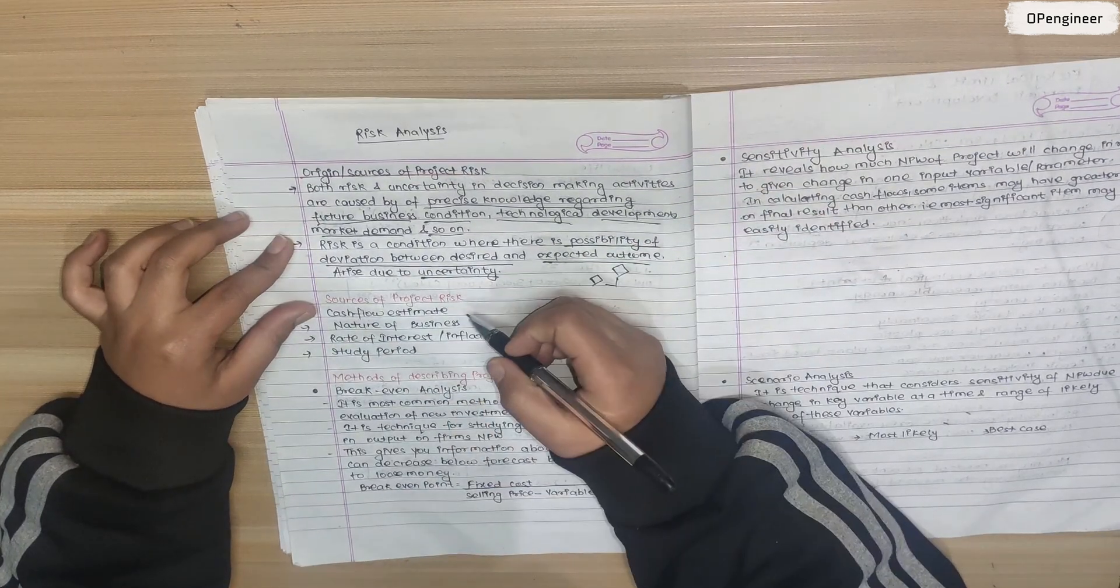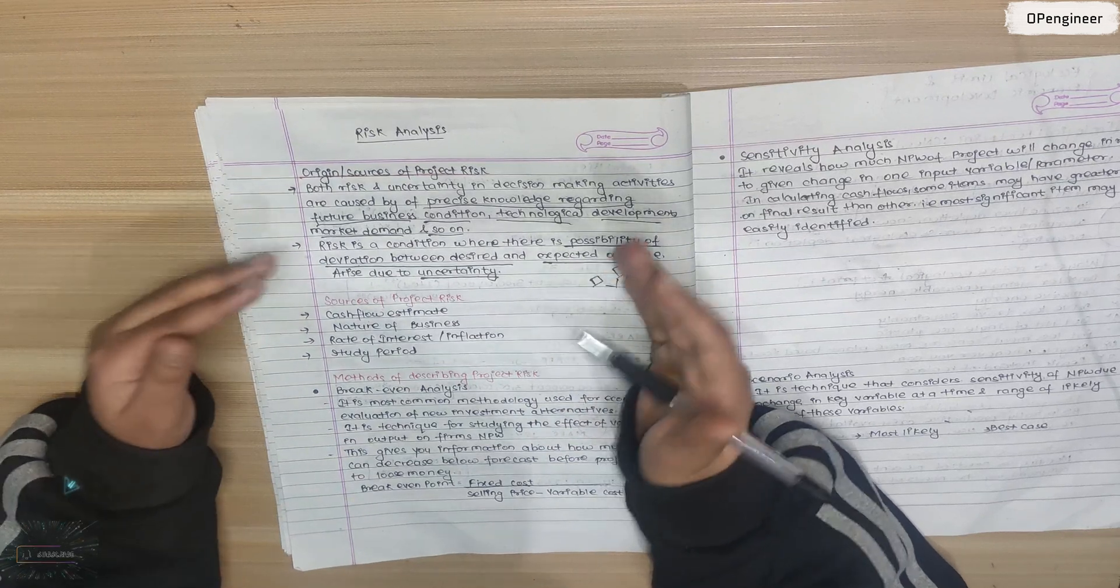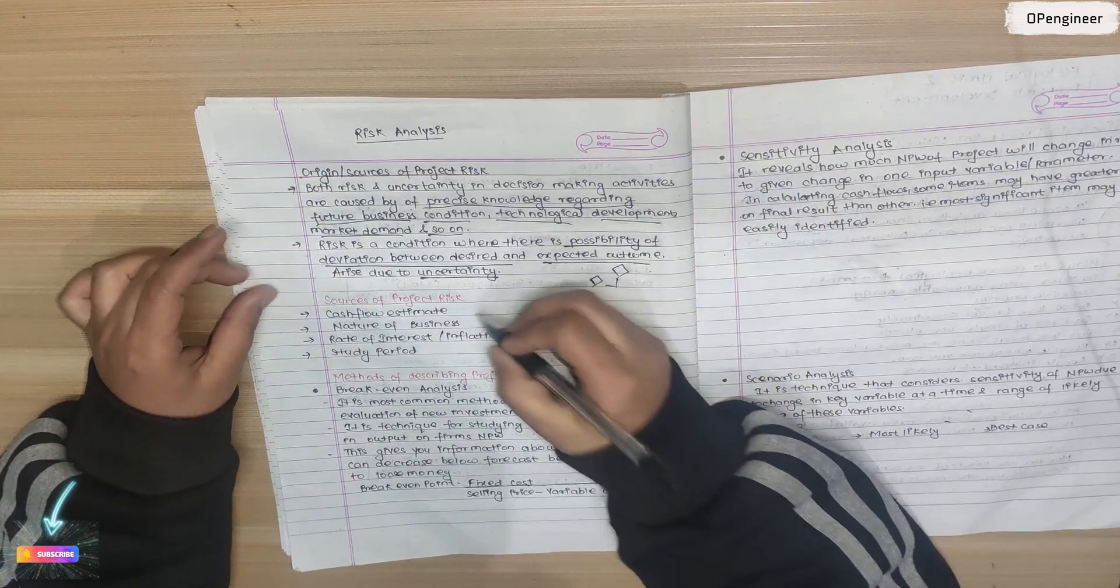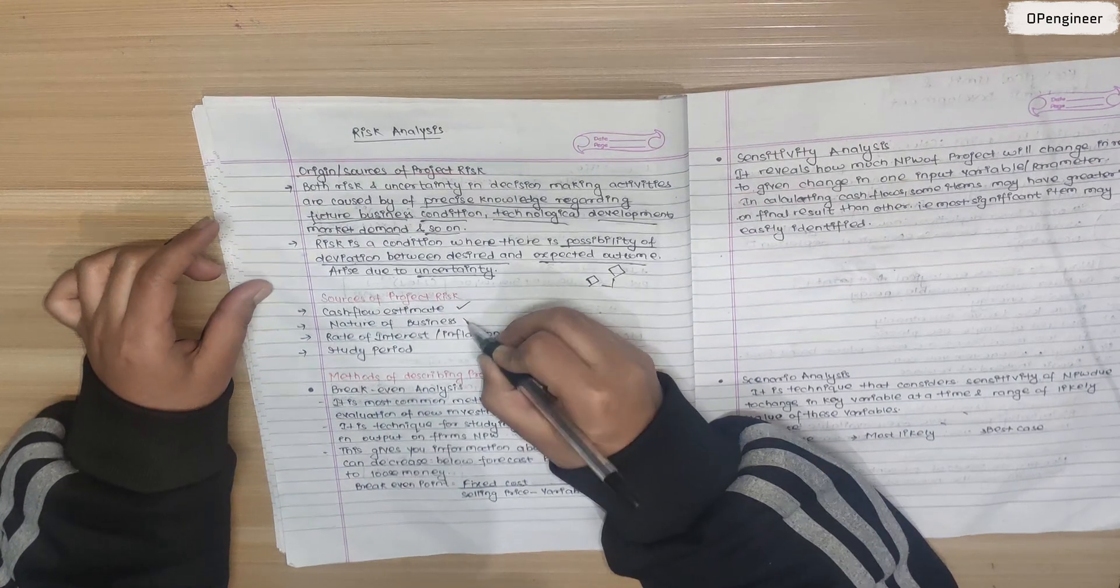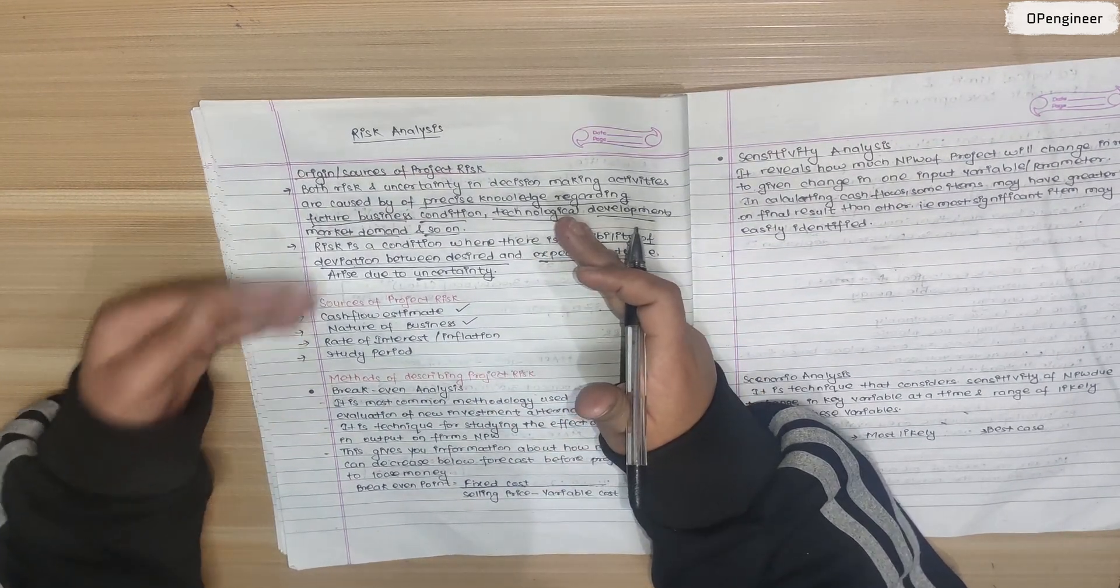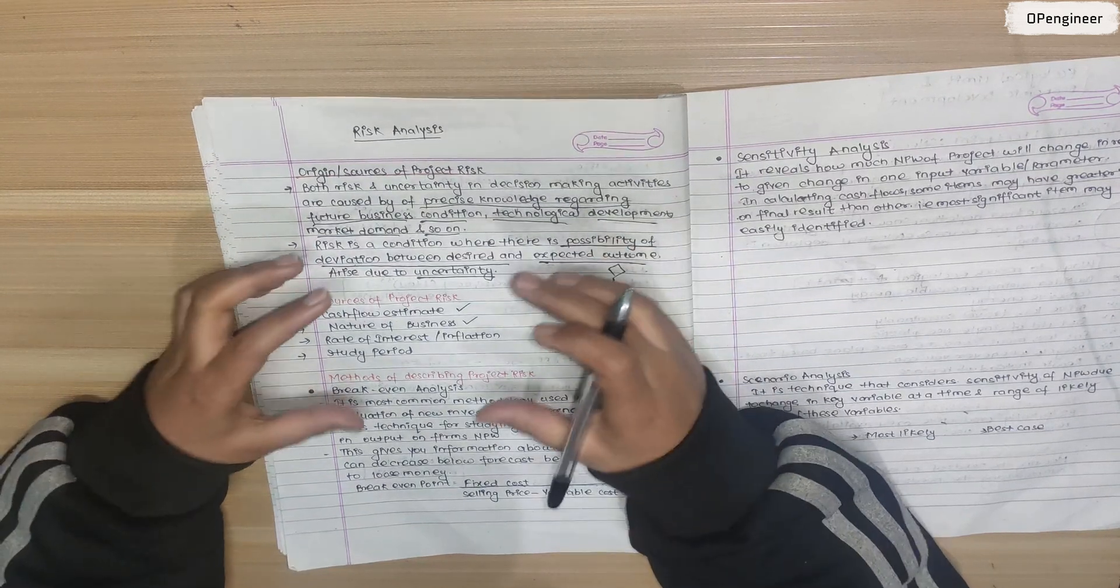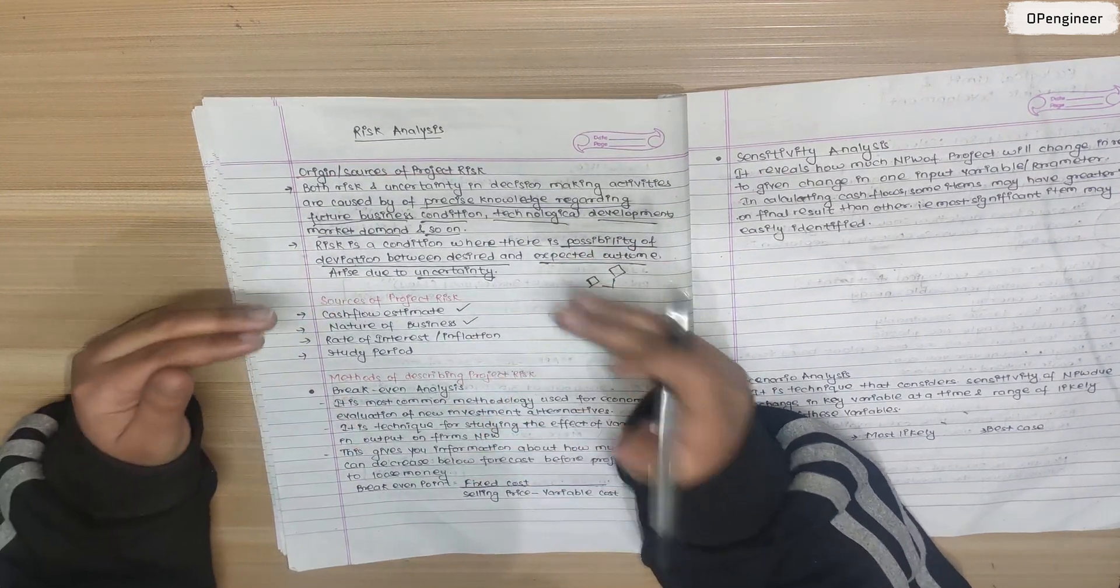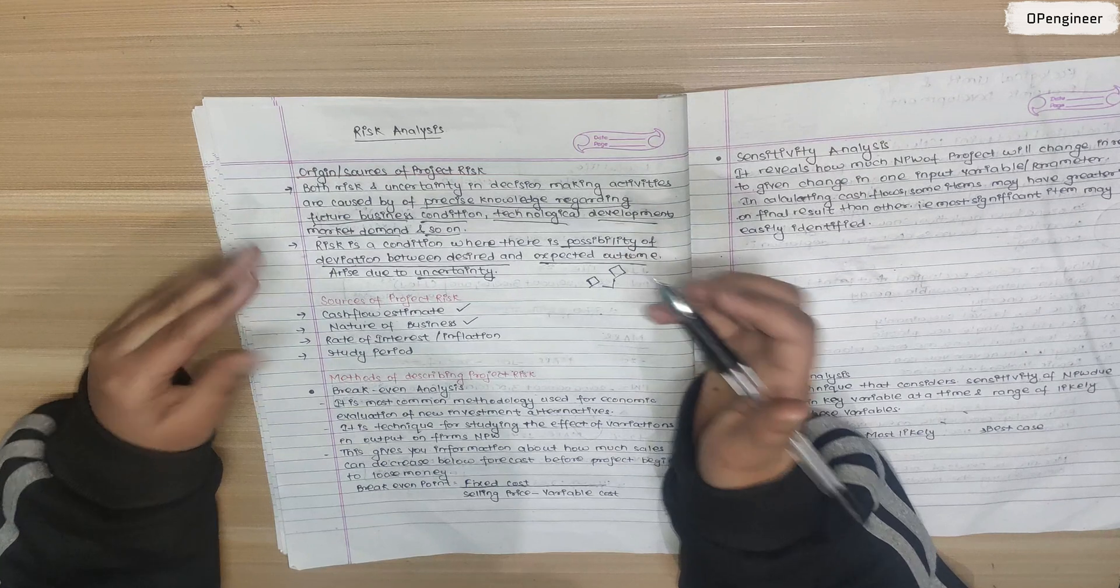The sources are: cash flow estimate - if there are errors in cash flow estimate, there is project risk. Nature of business - some businesses are good, some are not, and the nature of business also creates risk for the project.